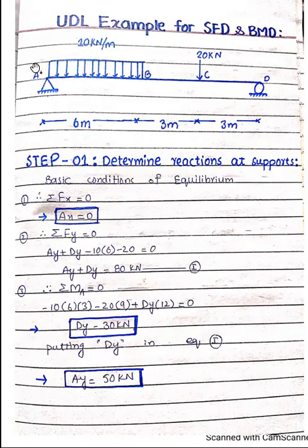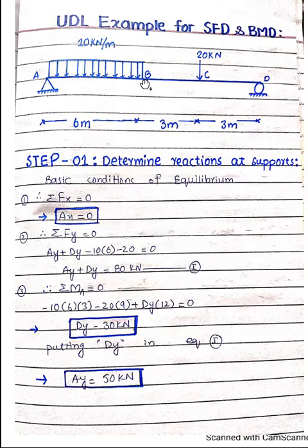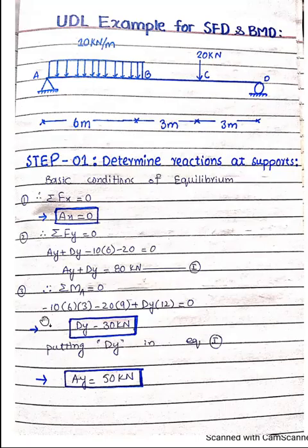So Ay plus Dy minus 10 times its total span of 6 meters gives us the total force applied over span AB: minus 10 into 6 equals minus 60, minus 20, giving minus 80. Therefore Ay plus Dy equals 80 kilonewton. The third condition is that the sum of all moments should equal zero.